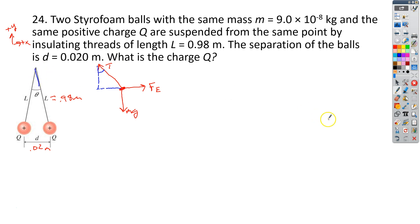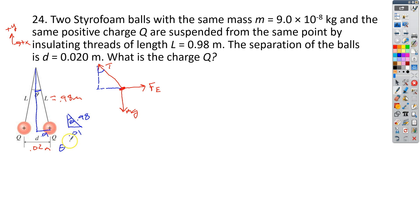Going back to our picture, we need to find the angle at the top. The distance from center to one ball is only 0.01 meters (half of 0.02), and the length of the thread is 0.98 meters. We draw a triangle: the opposite side is 0.01 and the hypotenuse is 0.98. So the angle equals the inverse sine of 0.01 over 0.98. Plugging that into a calculator gives a very small angle: only 0.585 degrees. So T's y-component is T times cosine of 0.585°, and its x-component is T times sine of 0.585°.